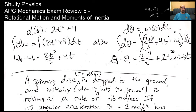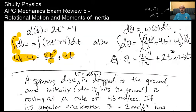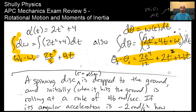If you integrate alpha with respect to time, you get something like 2t³ over 3 plus 4t as omega—keep in mind that goes from an initial omega to a final omega, giving you a change in omega. Also keep in mind that omega instantaneous is d theta over dt, so d theta equals omega dt. You can integrate that as well to get a displacement function for a time-dependent acceleration.